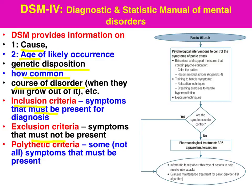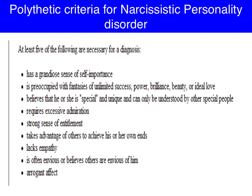And then we have polythetic criteria. For polythetic criteria, we only need some of the symptoms for a diagnosis. For example, for narcissism, we only need five of nine categories in order to be diagnosed as being narcissistic.